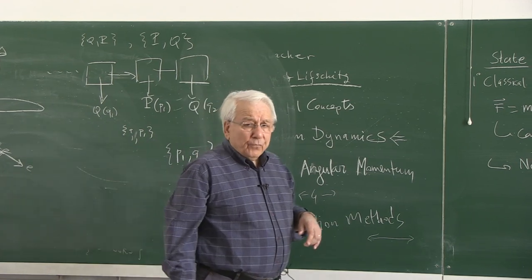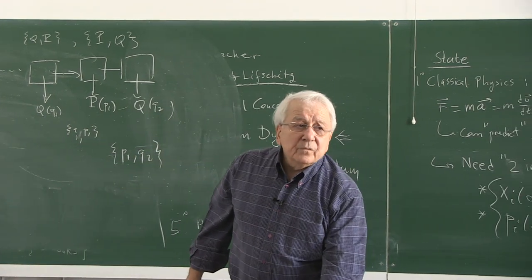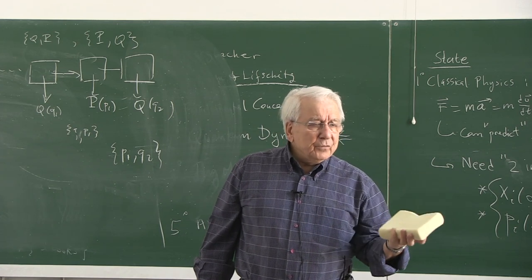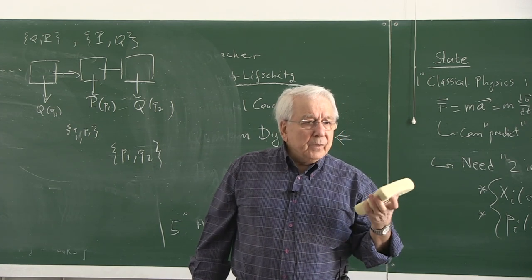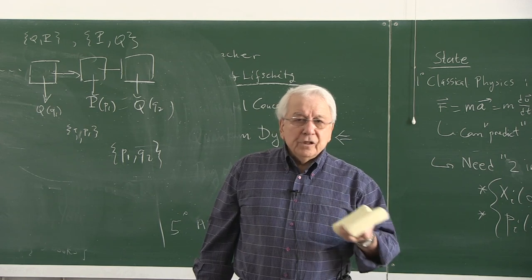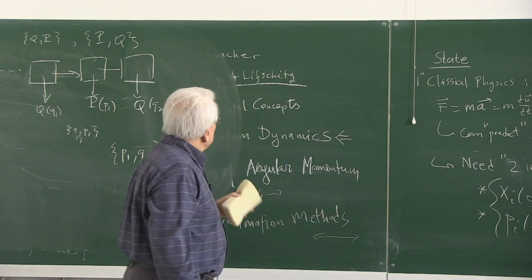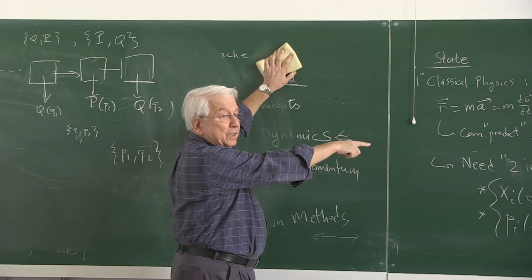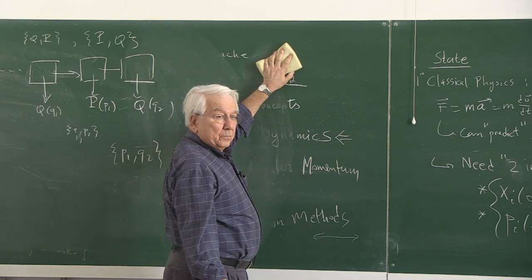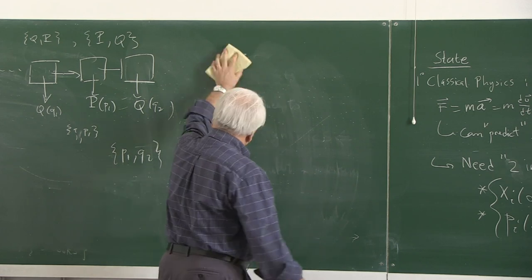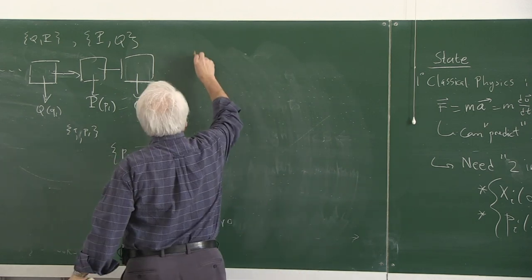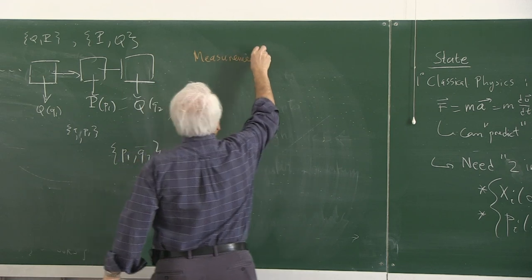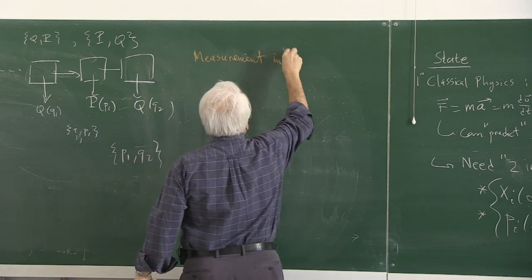Measurement of entities — what were those entities in classical physics? Dynamical variables: position, momentum, angular momentum, energy, whatever. It was something we didn't meet in the classical realm: measurement is an order-dependent thing — measurement in the micro world, the atomic world.